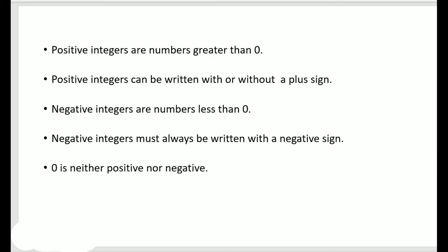Let's summarize what we learned. Integers are a set of positive numbers, zero, and negative numbers. Positive integers are numbers greater than zero: one, two, three, four, and so on, and can be written with or without a plus sign. Negative integers are numbers less than zero and must always be written with the minus sign — for example, minus three, minus four, minus five. Zero is neither positive nor negative. In the next lesson we shall learn how to represent integers on a number line.